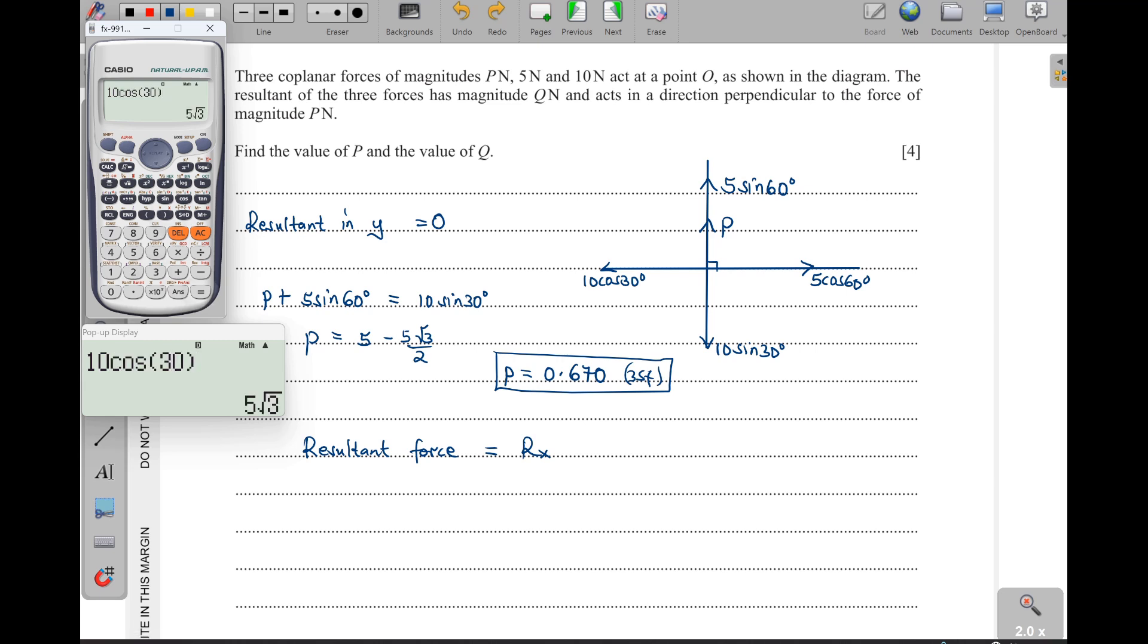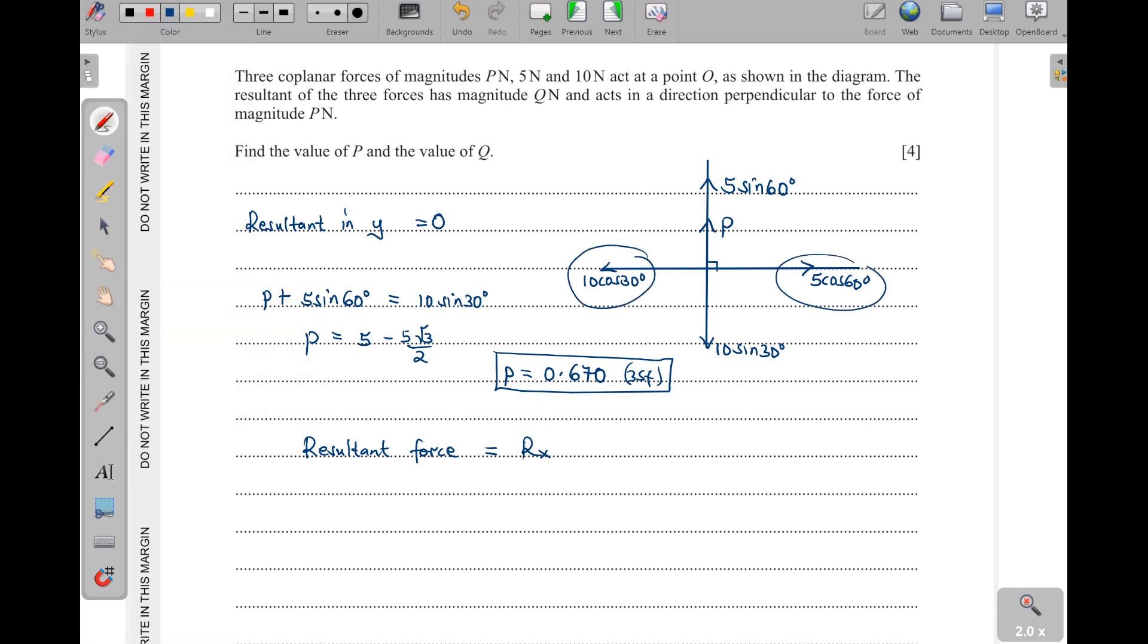Cosine of 30 is root 3 over 2. 10 cosine of 30, what do we get? That is 5 root 3 - in decimals it is 8.66. Then how about cosine of 60? Cosine of 60 is of course a half, so times 5, that one will give us 2.5. So that means this one is bigger than this, so meaning our Q, the resultant of the forces, we shall get this one then subtract this one.